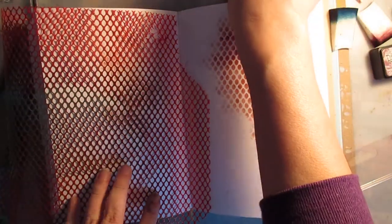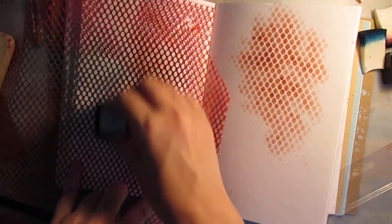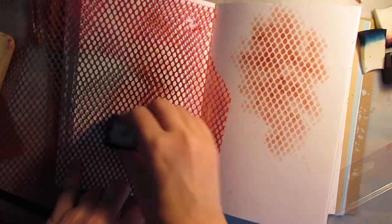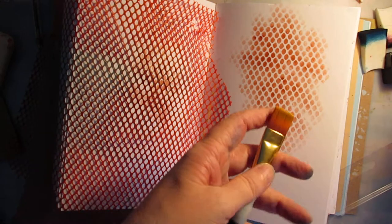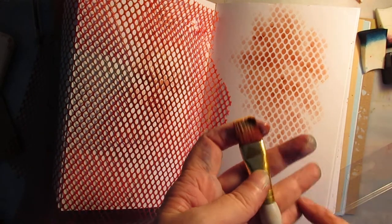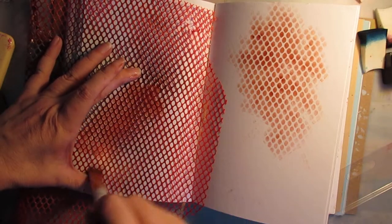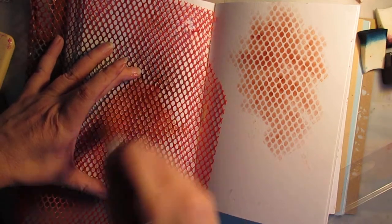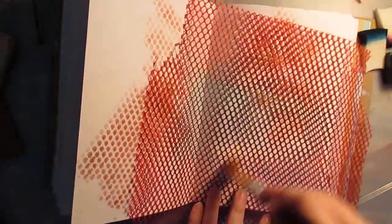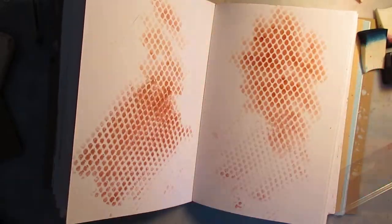Another thing you can do is you can ink the stencil or whatever you're using and get a damp brush. I'm going to have to mist this a little bit. And you brush the ink off the stencil and it kind of gives you a watercolor effect, which is kind of nice if you want just a light bit of color.